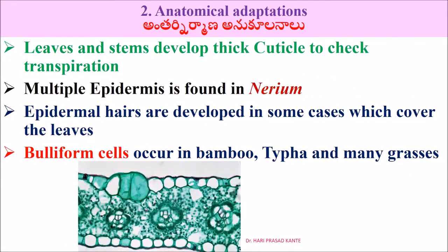Morphological adaptations in leaves: leaves and stems develop a thick cuticle to check transpiration. Multiple epidermis is found in Nerium — this is a very important question in entrance examinations. Epidermal hairs are developed in some cases which cover the leaves.